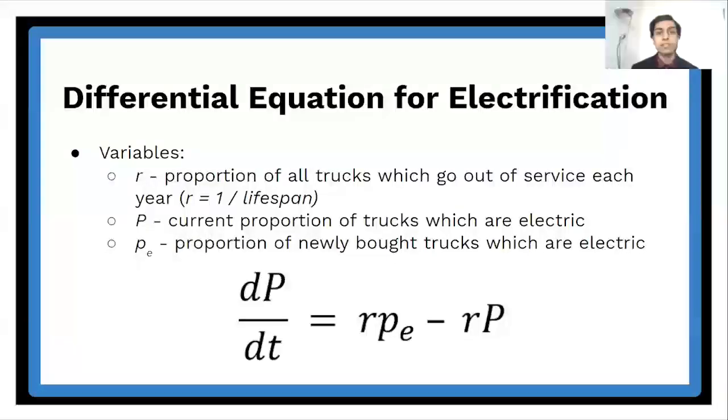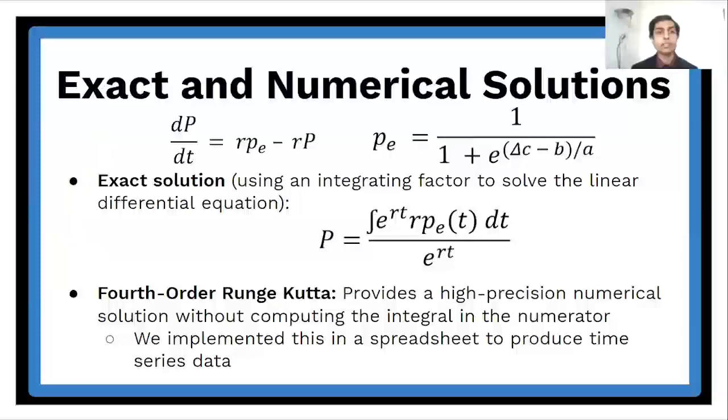So next, now that we have this logistic model of demand, we created a differential equation, which will tell us the rate of electrification. And this rate is given by two components. The first term in our equation represents the rate at which electric trucks enter the market and is determined by the proportion of newly bought trucks which are electric derived in the previous section. The second term represents the rate at which these trucks go out of service and leave the active fleet. Once we apply this differential equation, we can find both exact and numerical solutions to get time series data for the future proportion of electric trucks.